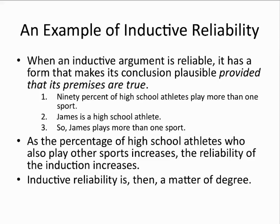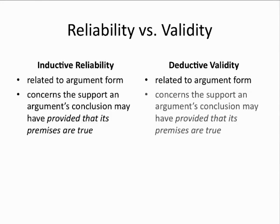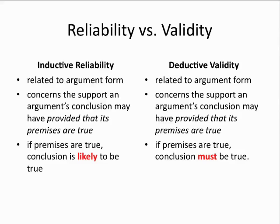Let's compare and contrast inductive reliability and deductive validity. Both are related to an argument's form, and both are concerned with the support that the conclusion obtains from premises which are assumed to be true. So far there's no difference between reliability and validity. But here's where they differ: the conclusion of an inductive argument, even on the assumption that the premises are true, will only yield a probable or likely conclusion, whereas a deductive argument yields a necessary or conclusive outcome.